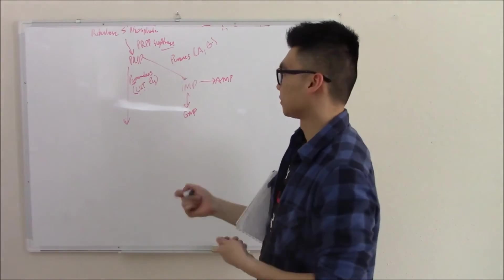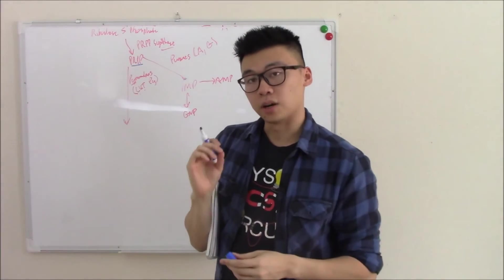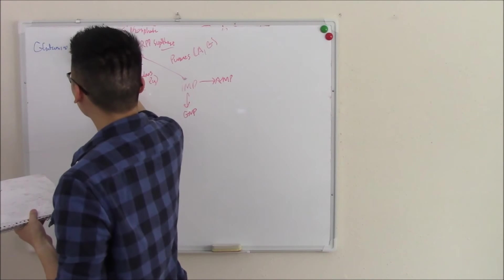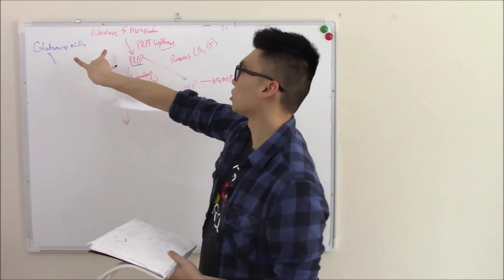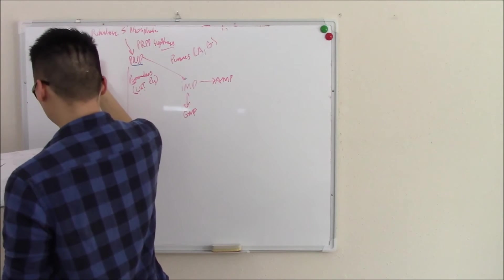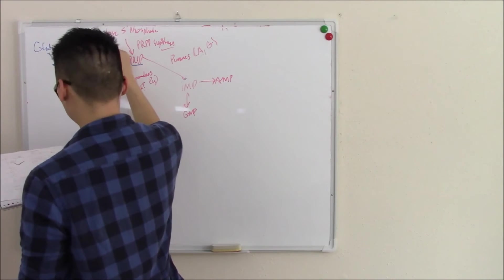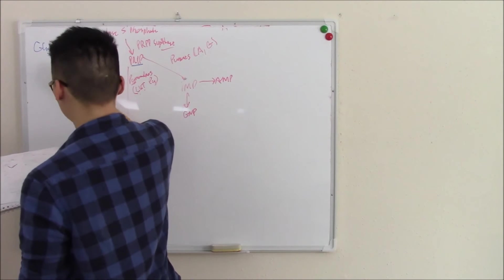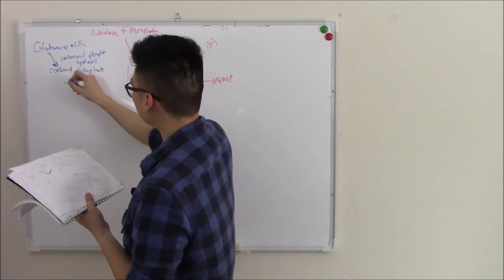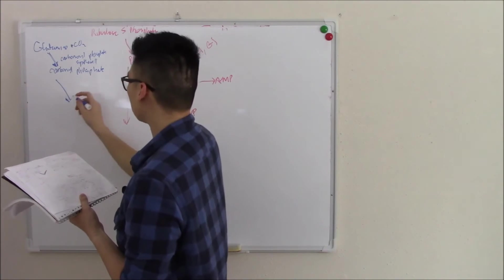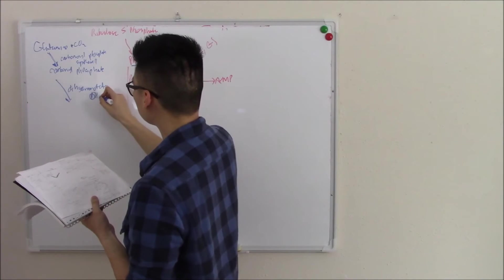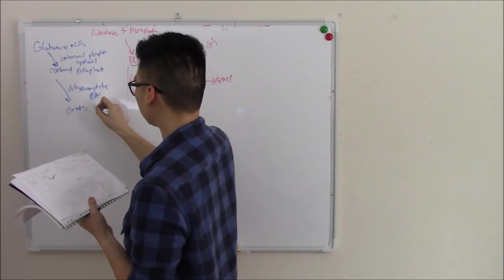Moving on to pyrimidine synthesis. Pyrimidines, of course, we'll start with PRPP, but it also needs a contributor from glutamine. Glutamine and a little bit of CO2. Glutamine and CO2 will help enter the cycle and then with PRPP make our pyrimidines. So glutamine first gets worked on by carbamoyl phosphate synthase 2. That makes carbamoyl phosphate. Carbamoyl phosphate is worked on by dihydroorotate dehydrogenase. That makes orotic acid.